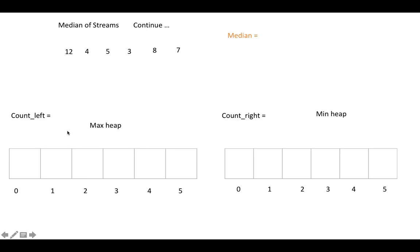Let's say the first number from the stream is 12. The question is where to put it: min heap or max heap. For the starting two numbers, always store the maximum in the min heap and the minimum in the max heap. So with 12 and 4, we store 12 into the min heap — count_right increases by 1 — and 4 into the max heap.